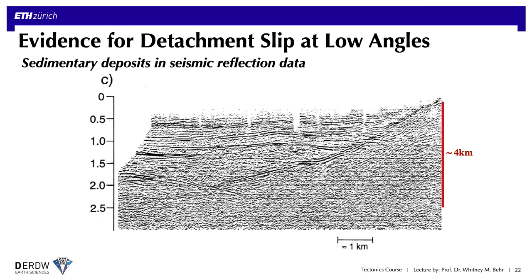There's also evidence from seismic reflection data of detachments or listric low angle normal faults, like this one in Nevada. This fault has some very distinctive sedimentary layers abutted against it in the hanging wall, and yet those sedimentary layers are still essentially horizontal. This supports the idea that this fault has been slipping at low angles throughout its entire history — if it had started as a high angle structure and then was later tilted toward lower angles, the sediments deposited against it should also have been tilted.